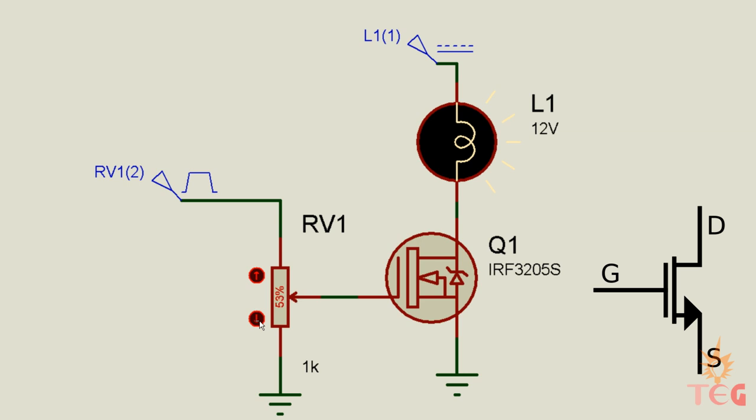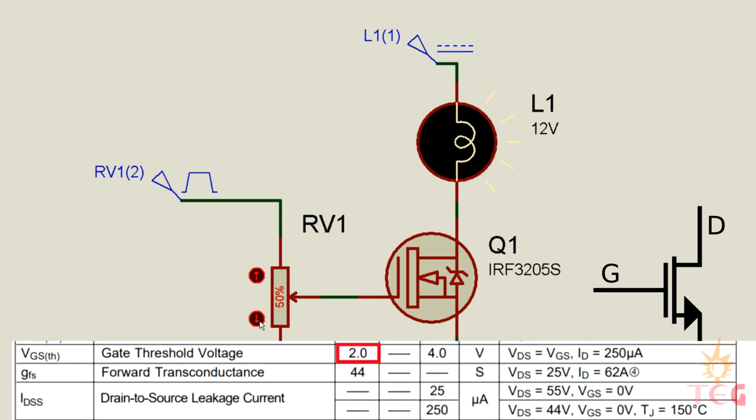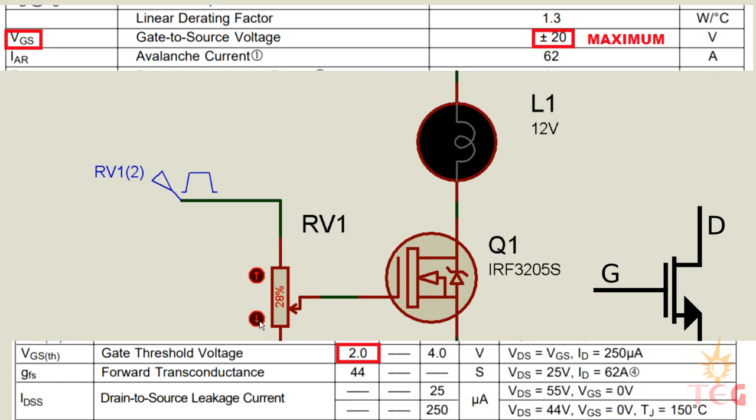A word of caution here: the threshold voltage is the voltage where the MOSFET starts to conduct a little bit. To make the MOSFET conduct enough to drive a significant load, it needs some additional voltage also.